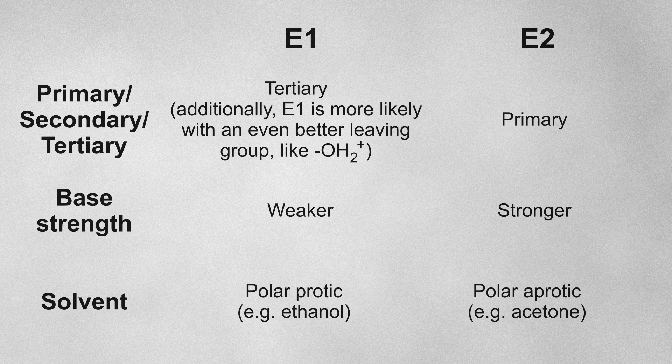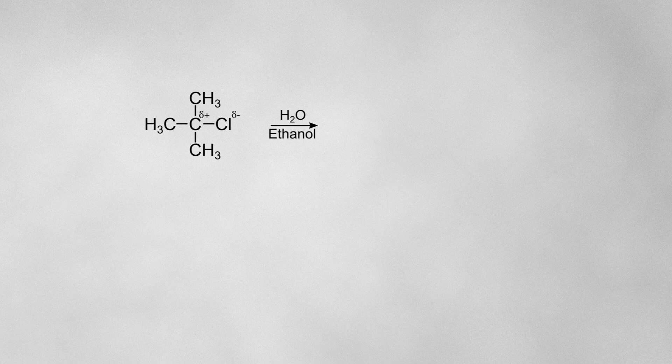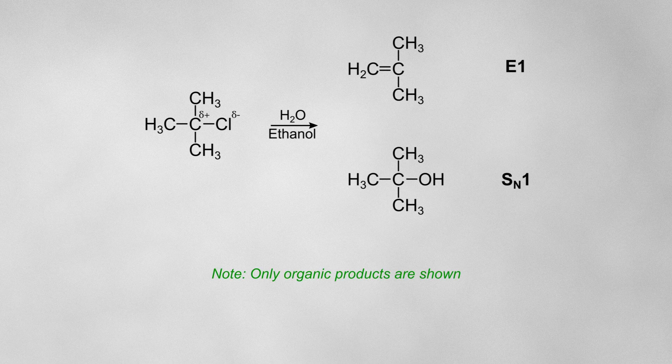So bringing this all together, reacting a tertiary haloalkane with a weak base, using an ethanolic solvent, will favor both E1 and SN1, as they tend to occur side by side.